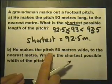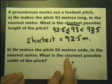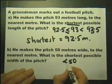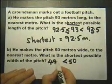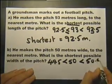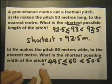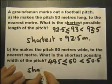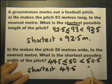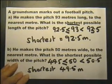He makes the pitch 50 metres wide to the nearest metre. What is the shortest possible width? So again, 50 to the nearest metre is going to be somewhere between 49.5 and 50.5. And it could include this 49.5 metres. So the shortest possible value of the width, if it's correct to 50 to the nearest metre, is going to be 49.5 metres.